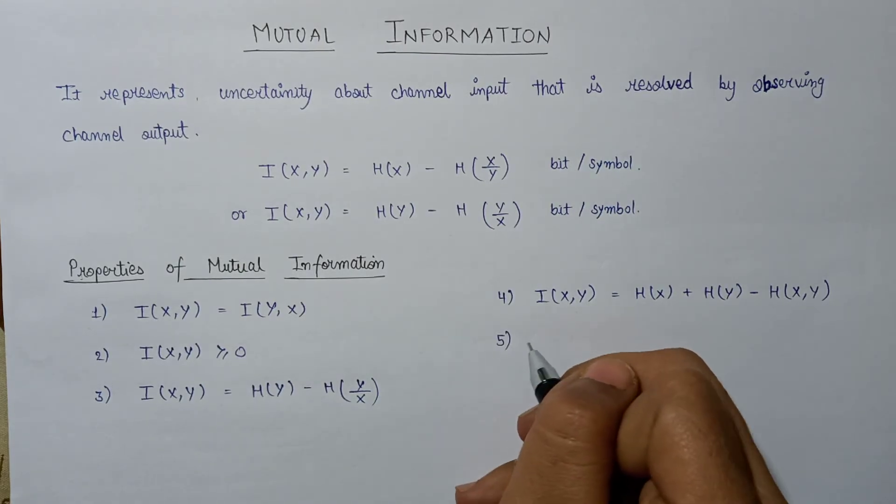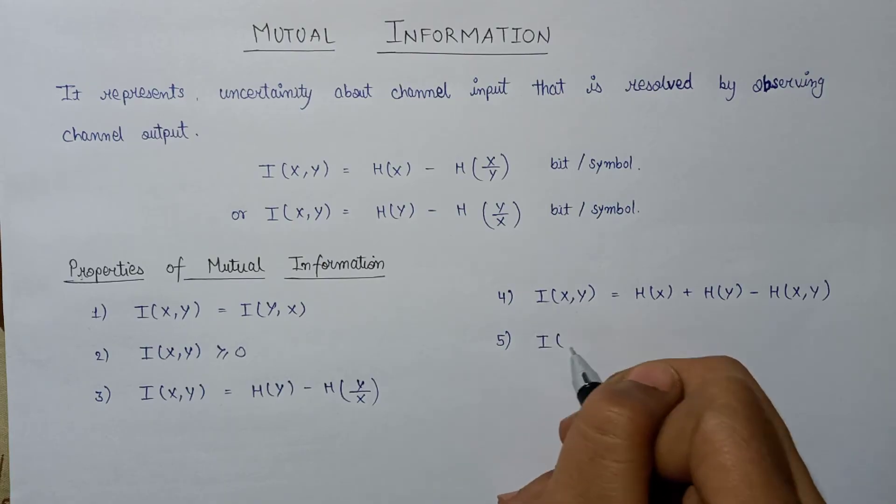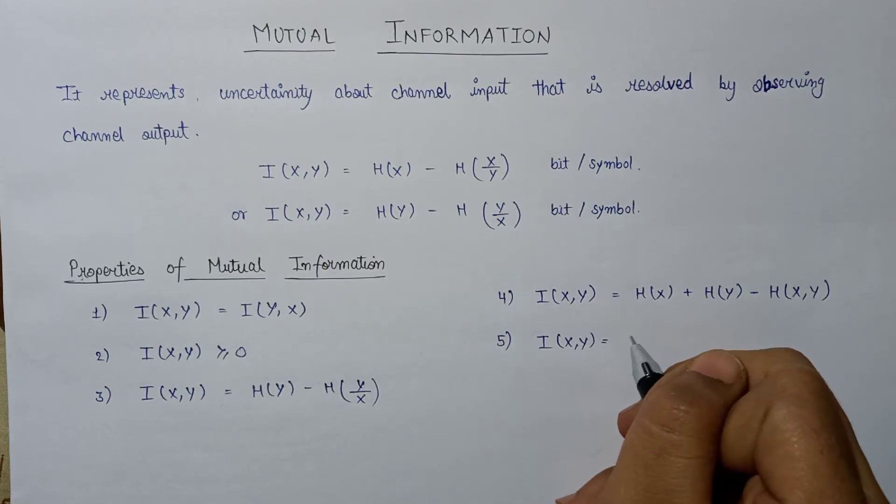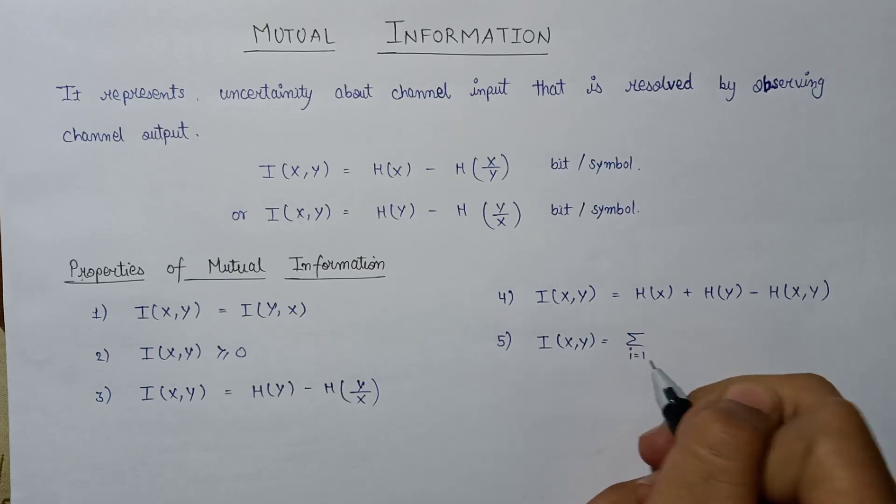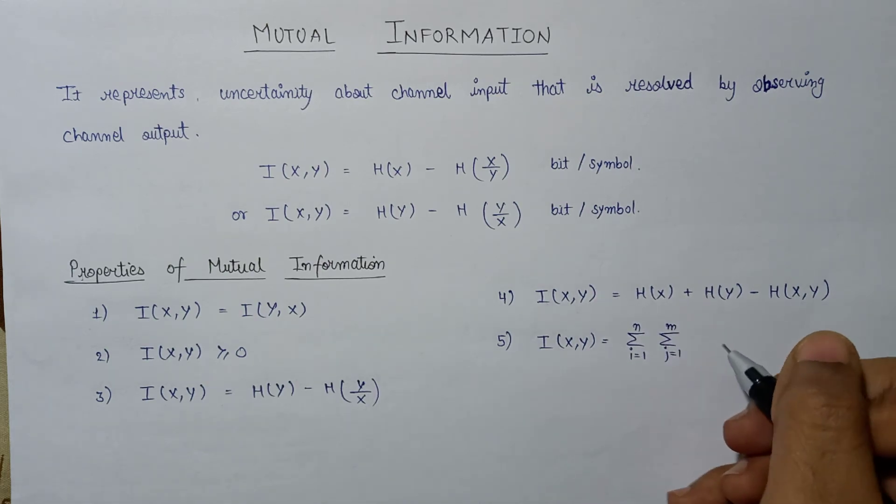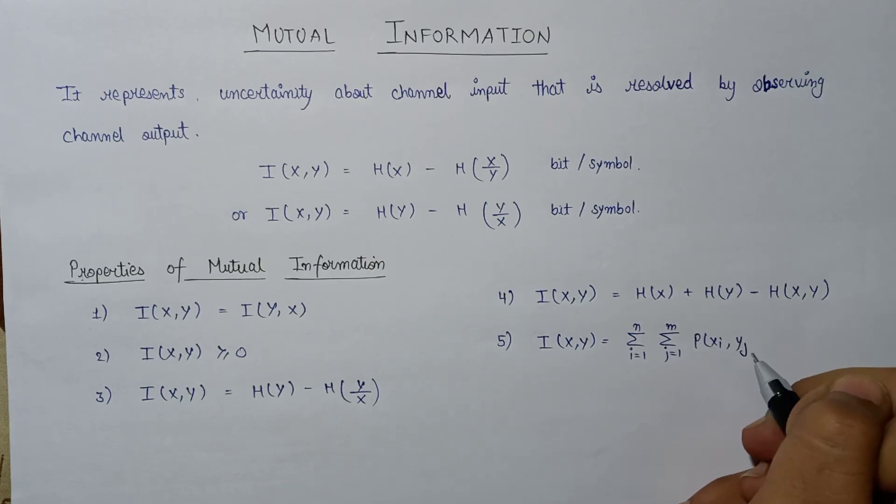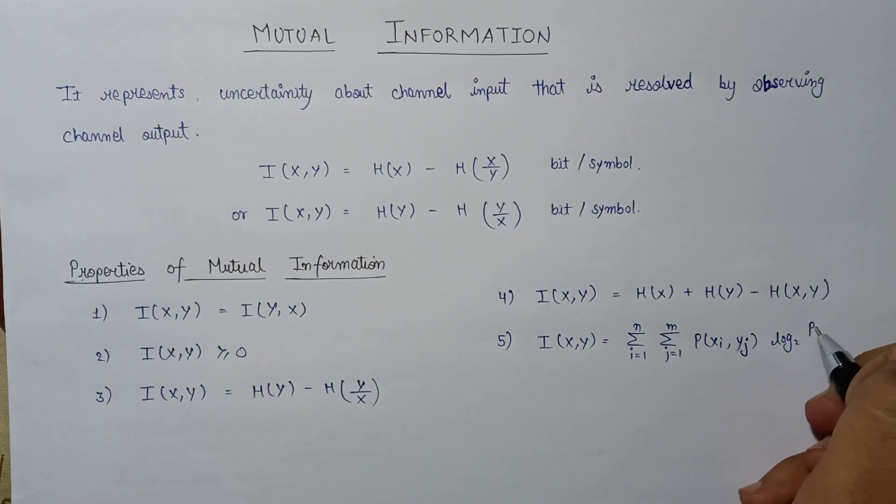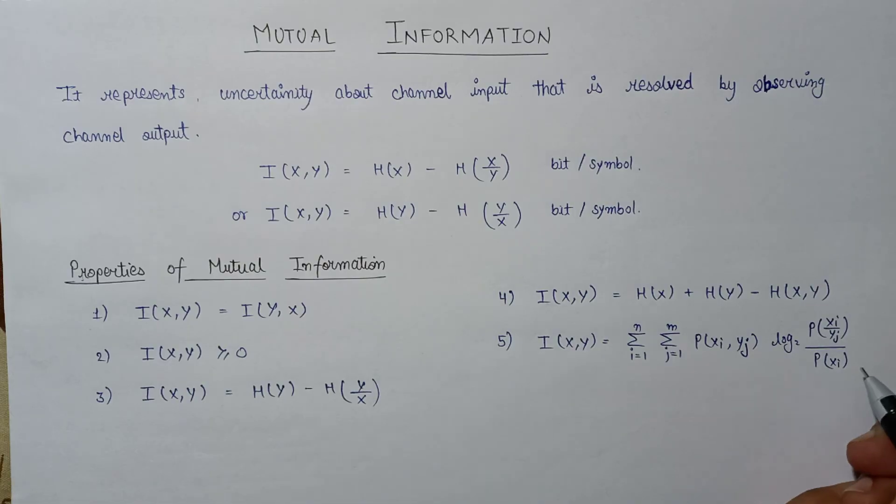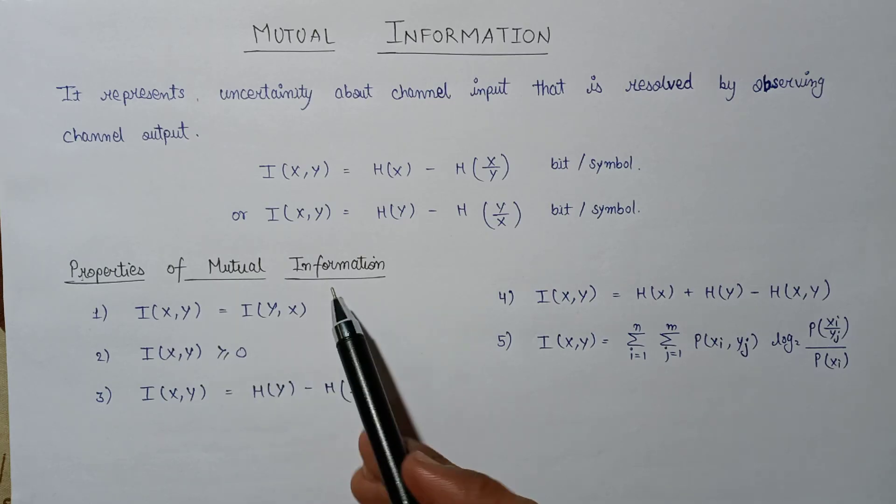The last property, the fifth property of mutual information, says that I equals summation where i ranges from 1 to m, j ranges from 1 to m, p log base 2 p(y) over p. So these are the five properties that are associated with the mutual information.